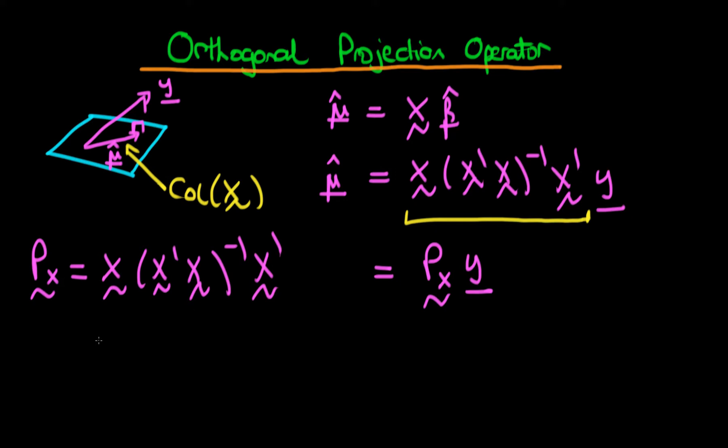We can ask what sort of properties this projection operator should have. Well, if we were to choose any vector which lies within the column space, let's assume we picked a vector, let's call it w, which lies within the column space of X.